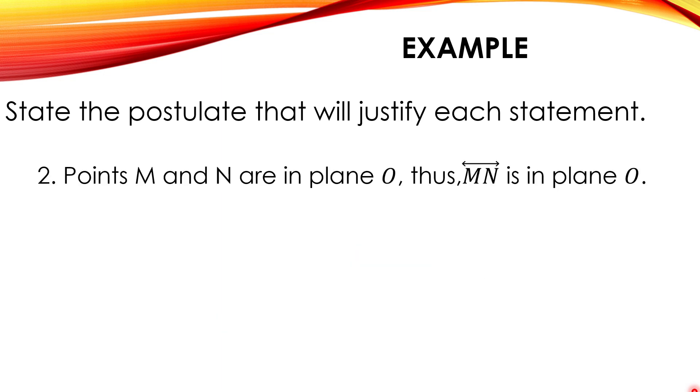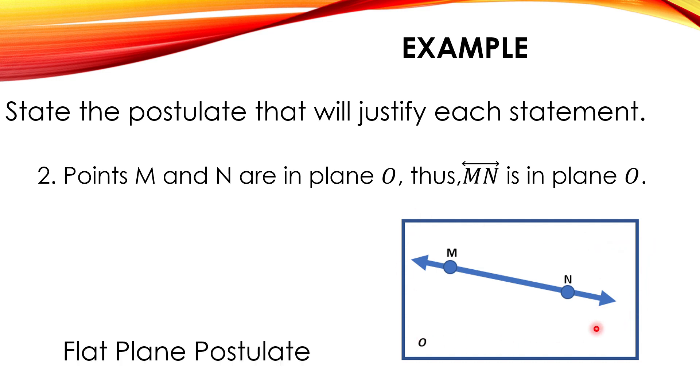For number 2, point M and N are in a plane O. Thus, line MN is in a plane O. We are going to illustrate that. We have here the point M and the point N and a line MN which is in the plane. Therefore, this line MN says that that plane is flat. Therefore, flat plane postulate.